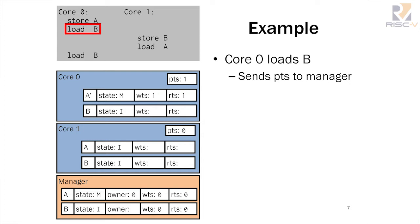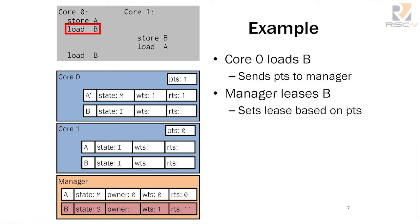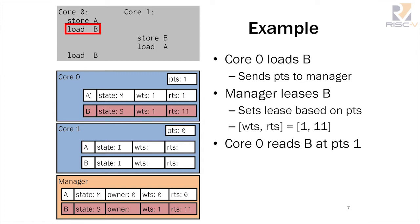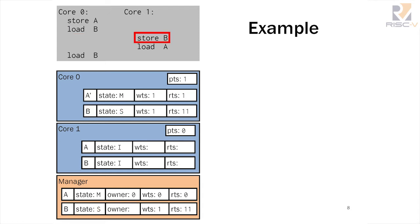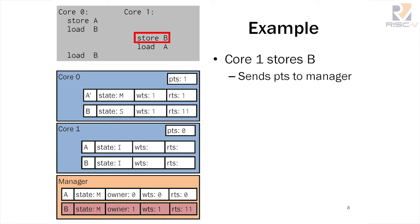Now let's see what happens if we load B — this is a load miss. We send a message to the manager requesting B. The manager leases B to core zero with a lease starting at timestamp one and ending at timestamp eleven, using a constant-time lease of length ten. The cache line is returned to core zero, which reads B at pts equal to one, because that's the pts we sent to the manager.